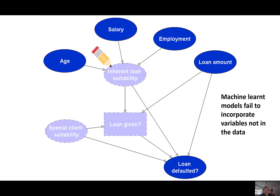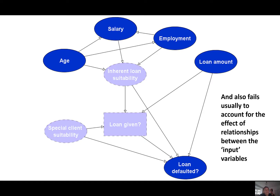People with expert domain knowledge and common sense understanding of causality can provide this graphical causal model before considering the data. Pure machine learning models also ignore the impact of causal statistical dependencies between input variables, such as those shown here. For example, employed people are more likely to have higher salaries than those who are not employed.